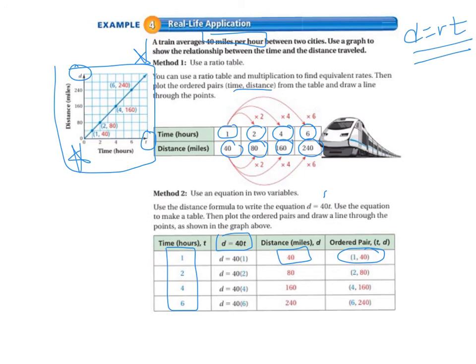And if we go for two hours, it's d equals 40 times 2, so that gives us a distance of 80 miles. So our ordered pair is (2, 80), and so on down the table.